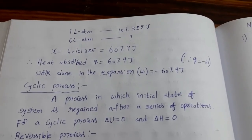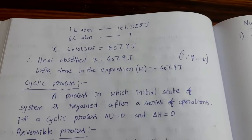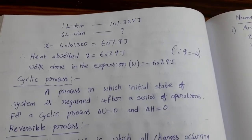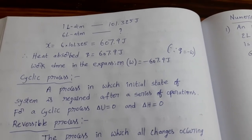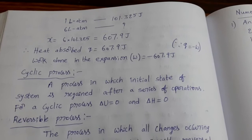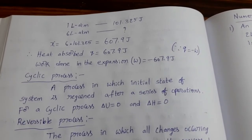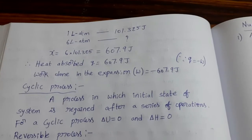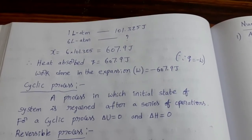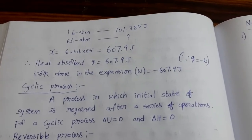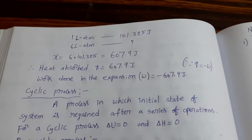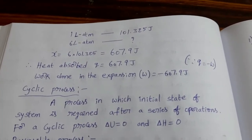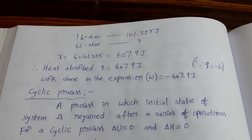Many students feel confusion between cyclic process and reversible process. The cyclic process definition: a process in which the initial state of the system is regained after a series of operations is called a cyclic process. That means a reactant is converted to products following different steps, then that product is converted back to reactant — finally the same substance is reached after a series of operations. That process is called cyclic process.